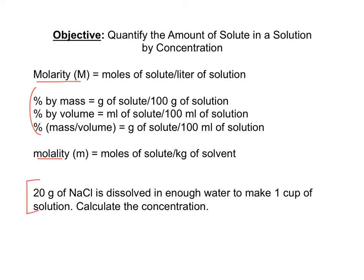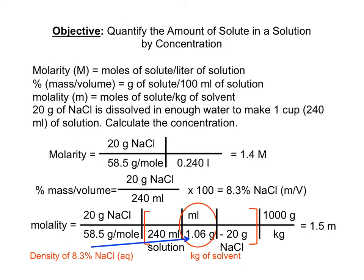The molarity of the solution is 1.4 molar, or 1.4 moles of NaCl in 1 liter of solution. We're given the mass of solute NaCl and the volume of solution, so the percent mass to volume is 8.3%. For molality, we have to calculate the kilograms of solvent, which is the water.